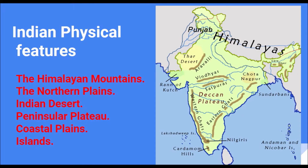Indian Physical Features. The vast expanse of the land mass of the Indian subcontinent is characterized by diversified physical features. India is found with marked geomorphological features like mountains, plains, plateaus, coastal lands and others.